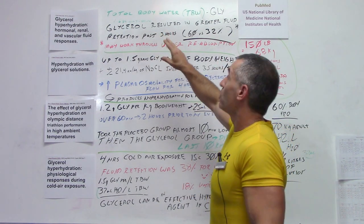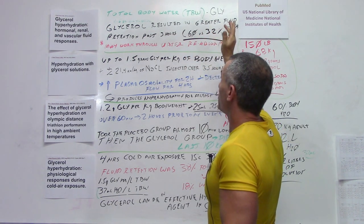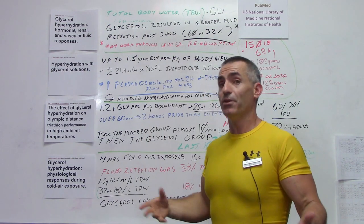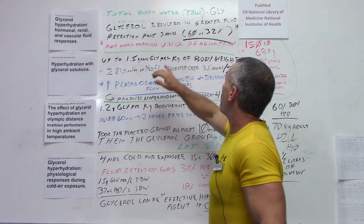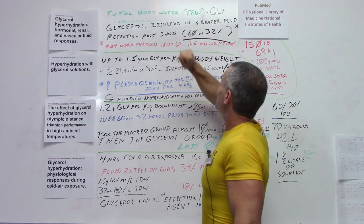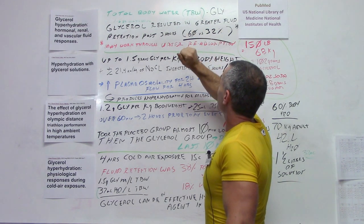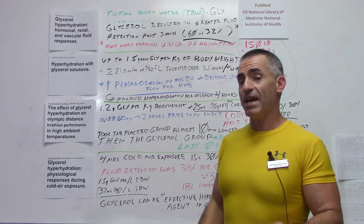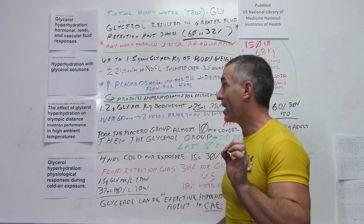They went by the total body water volume and did one and a half grams of glycerol per liter of total body water volume. The glycerol resulted in greater retention - these are just individuals sitting around doing nothing, not people actually exercising. What they found out after three hours, the glycerol group retained water 60% versus the water only group which only retained 32% of the fluids. That's where they came to the conclusion it may work positively through the kidneys to help with water reabsorption. Again, glycerol, not glycerin.